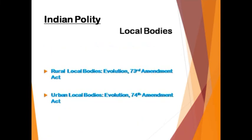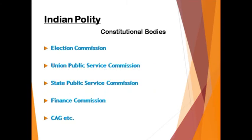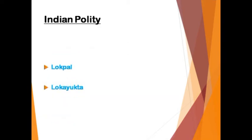Now comes the local bodies. We need to study the rural local bodies and the urban local bodies, the evolution and the amendment acts involved with both the bodies. Last but not the least, the constitutional bodies — the various commissions: the Election Commission, Union Public Service Commission, Finance Commission, and State Public Service Commission should all be studied thoroughly. Then comes the Lokpal and the Lokayukta — both are administrative ombudsmen, one at the centre and the other at the state level. Lokpal is at the centre and Lokayukta is meant for states.